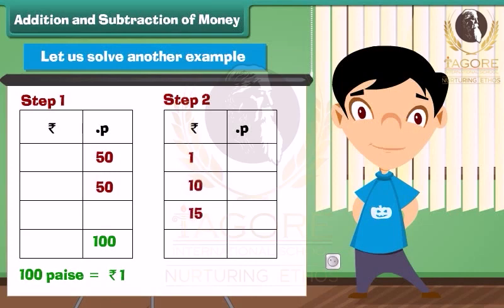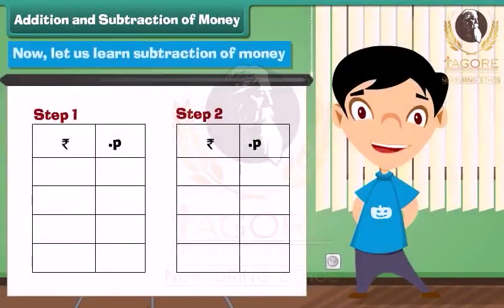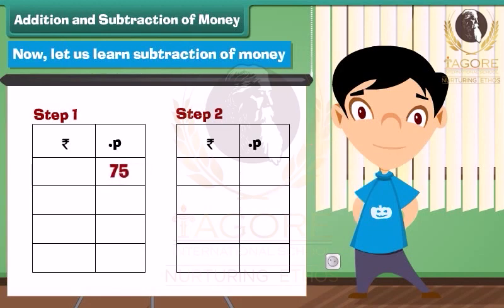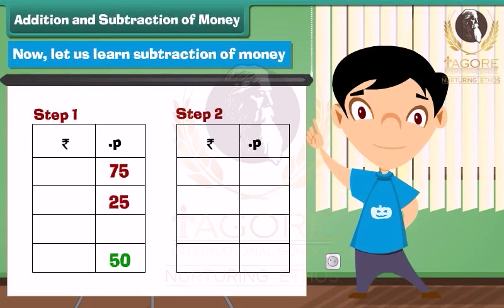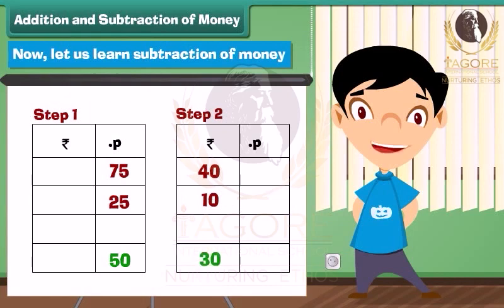Now let us learn subtraction of money. Subtract 10 rupees 50 paise from 40 rupees 75 paise. Step 1: Subtract the numbers in the paise column — 75 minus 25 equals 50 paise. Write 50 under the paise column. Step 2: Subtract the numbers in the rupees column — 40 minus 10 equals 30. Write 30 under the rupees column.